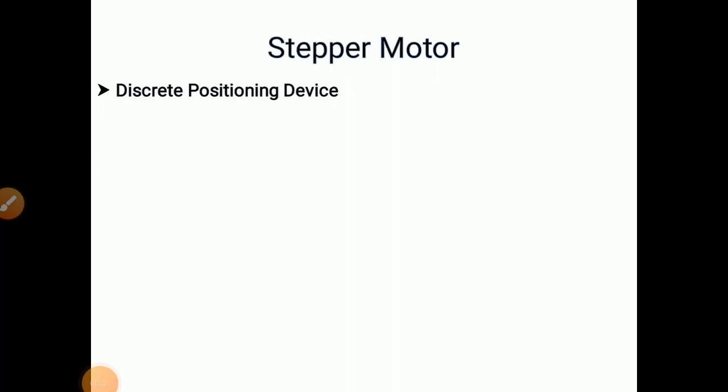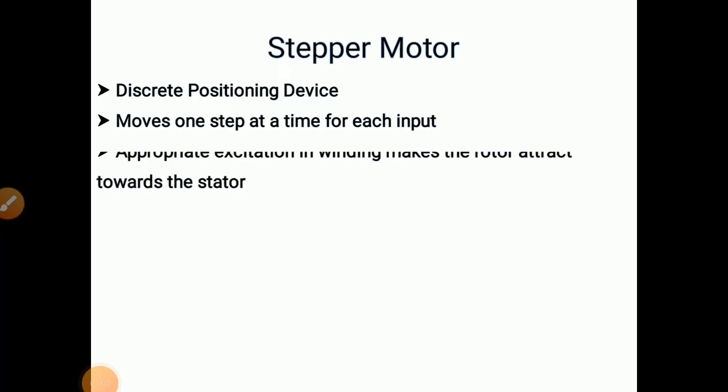So what is a stepper motor? It is a discrete positioning device. We get discrete positions step by step. It moves one step at a time for each input. Appropriate excitation in the winding makes the rotor attract towards the stator. So we have to excite the appropriate windings so that it makes the rotor attract towards the stator.